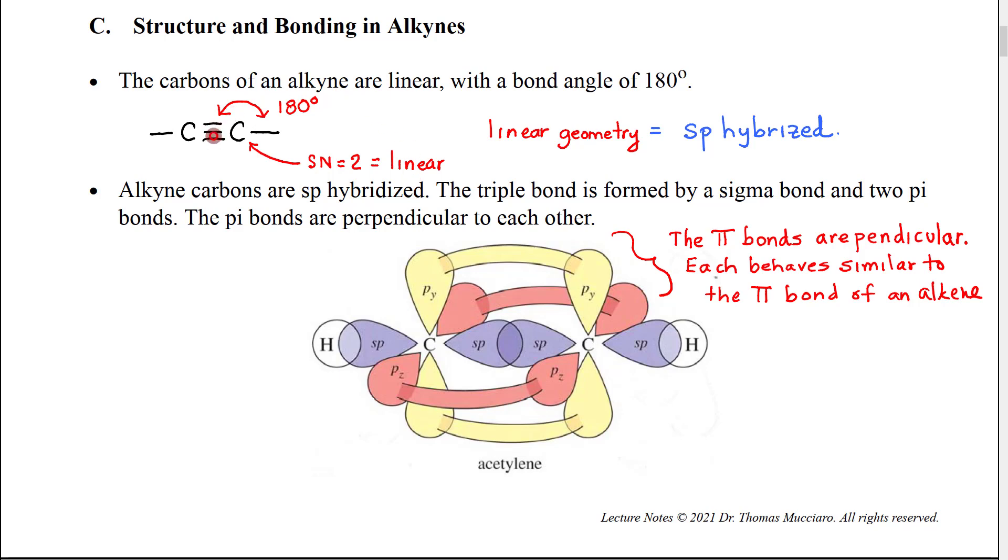that is going to give them a linear geometry, and it turns out also a linear shape. That also means that there's going to be a 180 degree angle between the triple bond and the other group that's attached to an alkyne carbon. Because they have a linear geometry, the carbons of the triple bond are going to be sp hybridized.